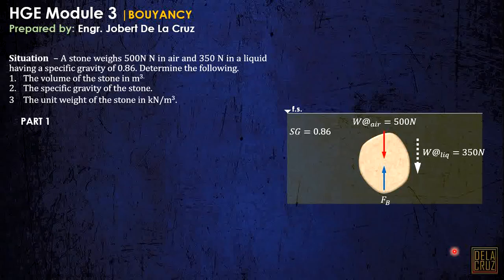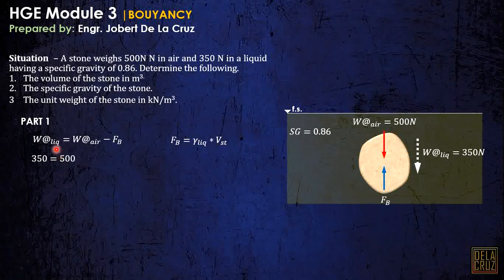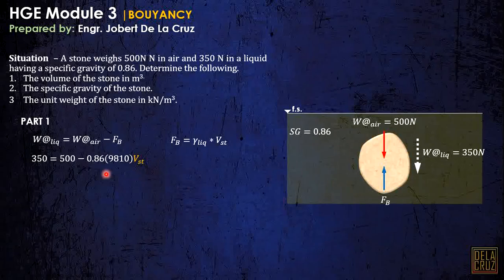We can say that: weight in liquid = weight in air minus buoyant force. Since buoyant force equals gamma times volume, we can calculate the volume of the stone. Substituting: weight in liquid is 350 N, weight in air is 500 N, and buoyant force is SG 0.86 times gamma of water times the volume of the stone (fully submerged). Solving gives us the volume of the stone.